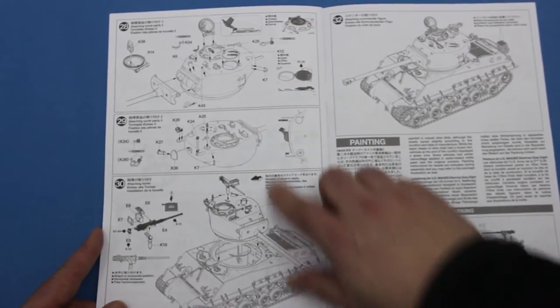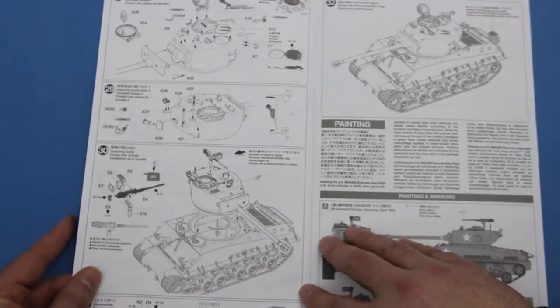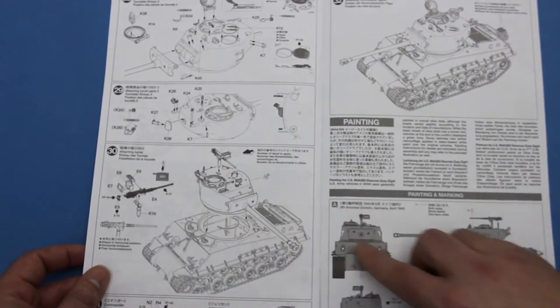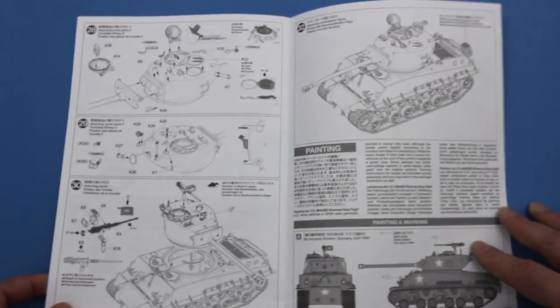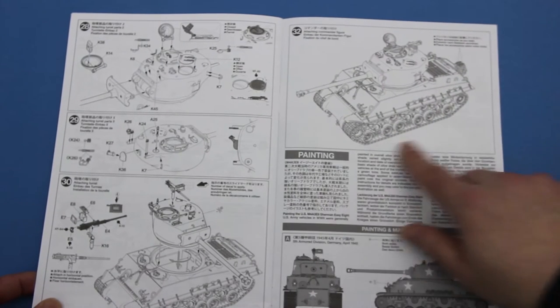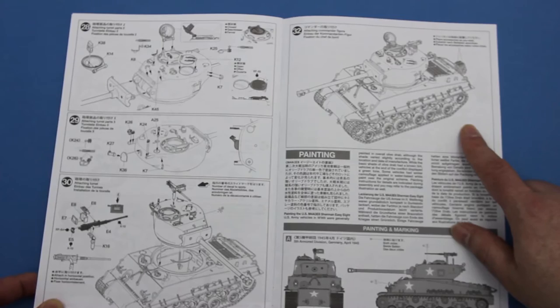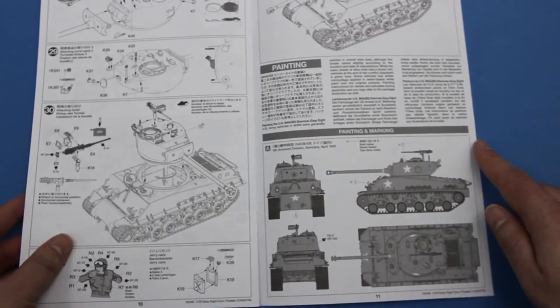And assembling the turret. The turret fits onto the hull with the familiar sort of bayonet fitment that most Tamiya kits have. And the familiar final stage here, stage 32, which is the sit back and admire it stage.